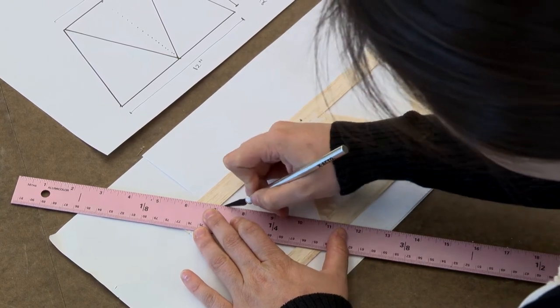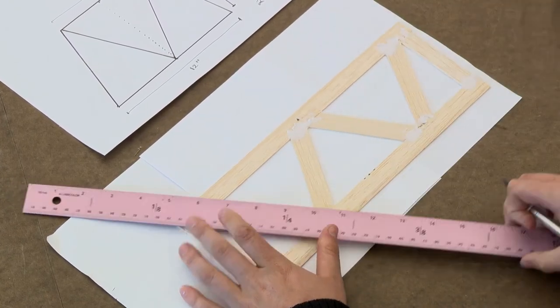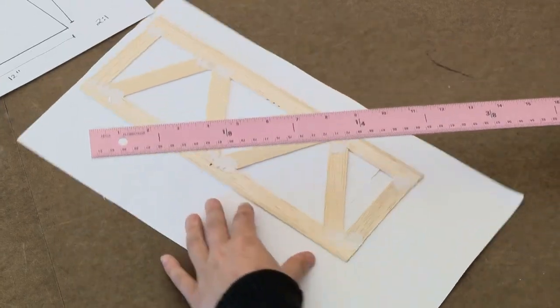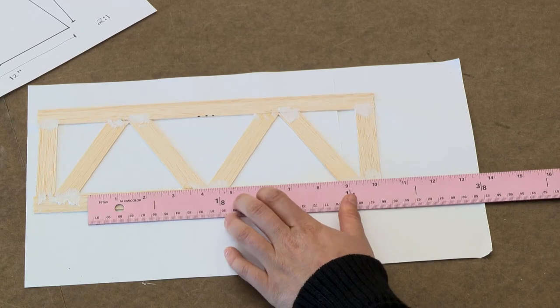So if I take a ruler and line it up with each member of the truss, I can take my exacto knife and cut out the paper behind it.